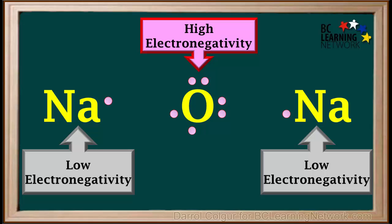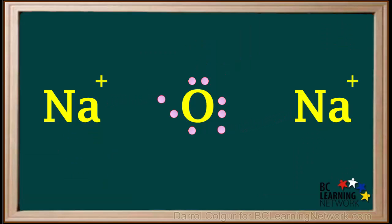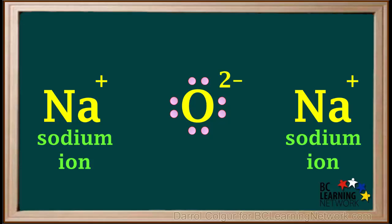So if we imagine that we combine two sodium atoms with an oxygen atom, an electron is transferred from each sodium atom to the oxygen atom. So we're left with two sodium ions and an oxide ion.